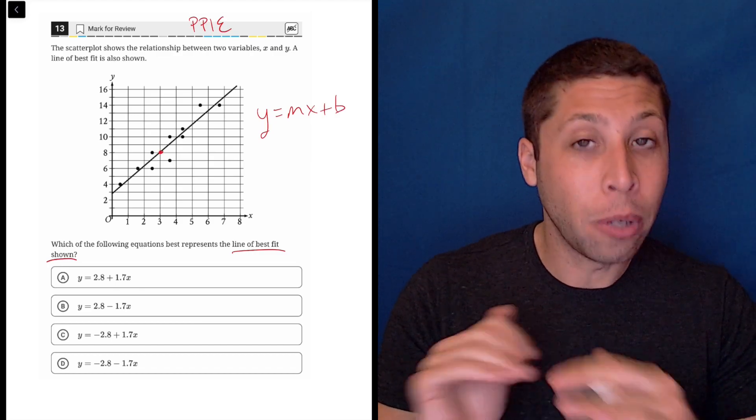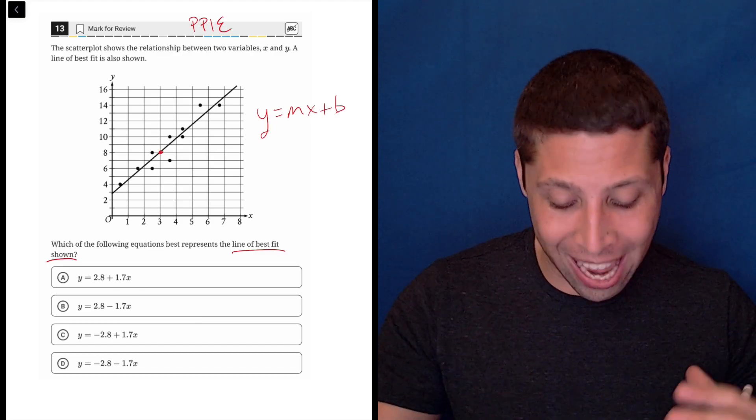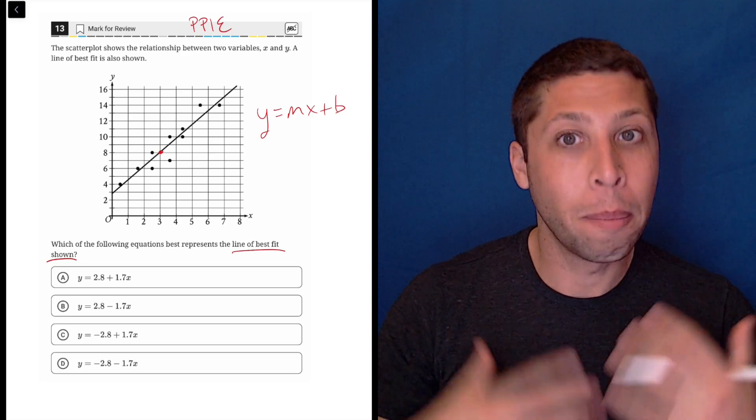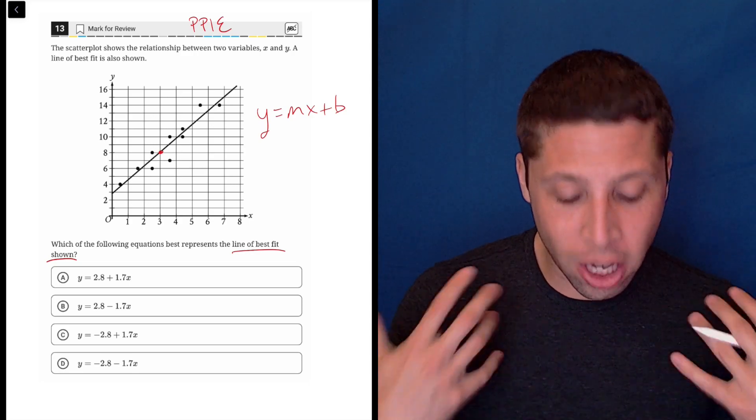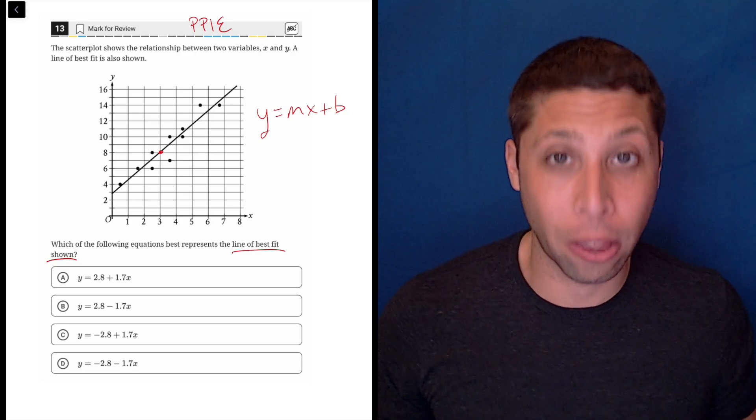But we don't need to do that. That would only really be useful if we had different numbers between the choices. Here it's just positives and negatives, so let's think about those things.